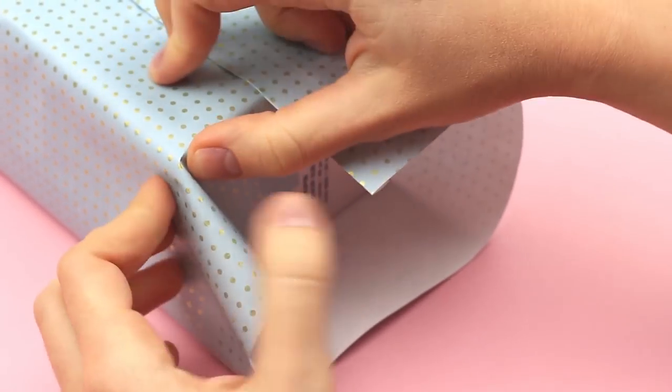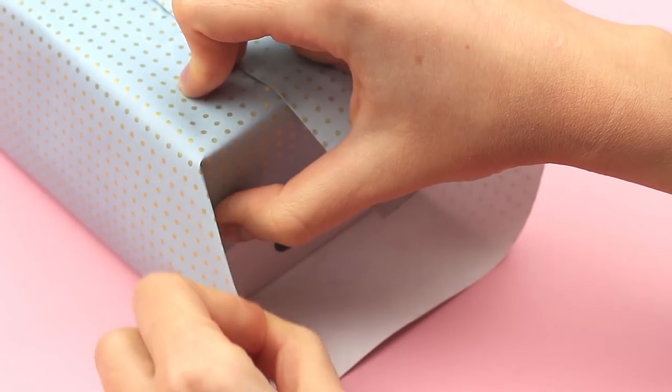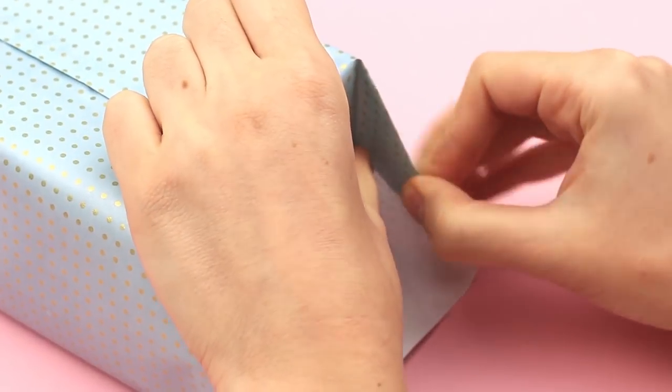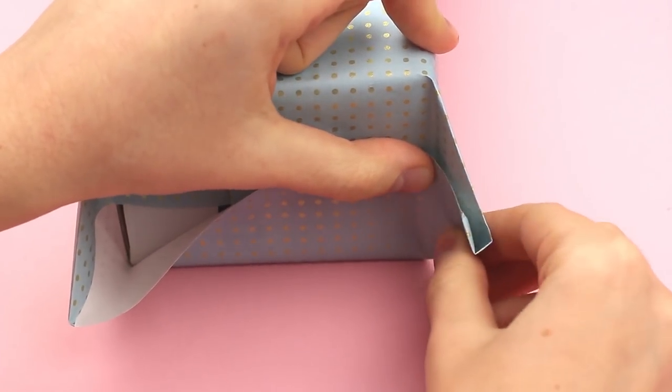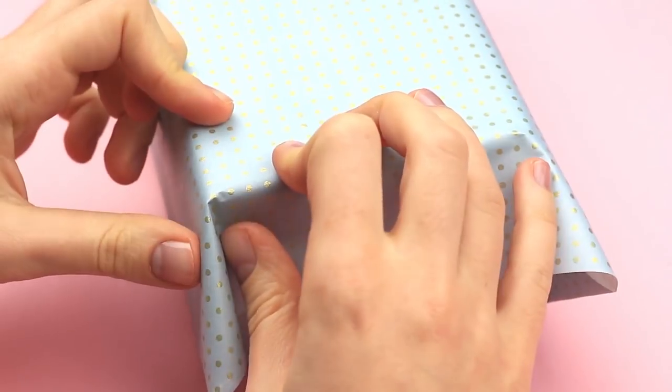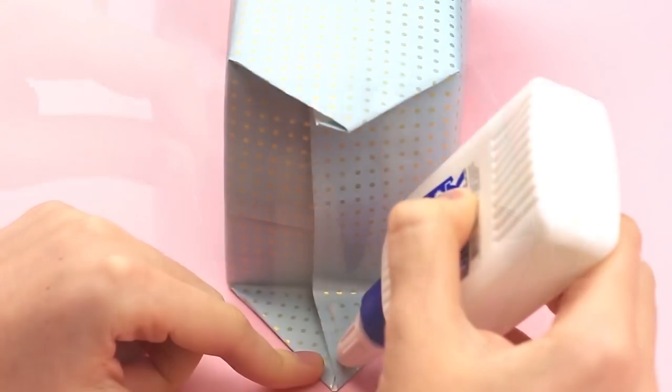There is loose paper at the sides, crease it at an angle. Fold the bottom to overlap the top part. Repeat for the other side. Glue the flaps.